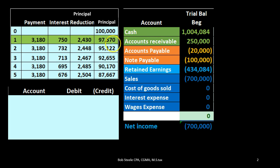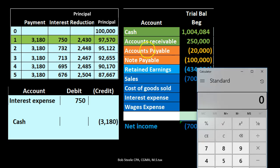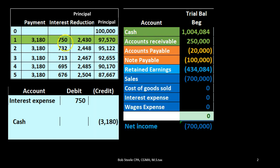After this first payment, the $100,000 should become $97,570. First question: is cash affected? Yes — we know the payment is $3,180, so cash is going to go down with a credit. Then we have interest expense — part of what we're paying is an expense and the other part decreases the loan. The interest expense is determined from the table: $100,000 times 9% divided by 12 for a monthly amount, giving us $750. The difference between the payment and the interest goes to the principal.